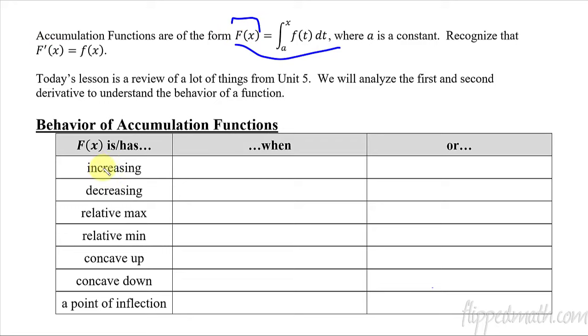So now what we're going to do is talk about the behavior of these accumulation functions, this capital F of x thing. When is F(x) increasing? F(x) is increasing when its derivative is greater than 0. We've done this before. Something's increasing if its derivative is positive, and it's decreasing if its derivative is negative. So there's nothing new with this except for the fact that we have this capital F. So pause the video and fill out the rest of this.